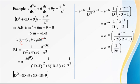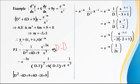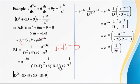Now PI = 1/(D² + 6D + 9) · e^(−3x) · (1/x³). Replace D with D + a where a = −3, so D → D − 3: (D−3)² + 6(D−3) + 9. Expanding: D² − 6D + 9 + 6D − 18 + 9. The −6D and +6D cancel, and 9 − 18 + 9 = 0, leaving only D². So PI = e^(−3x) · 1/D² · x^(−3).